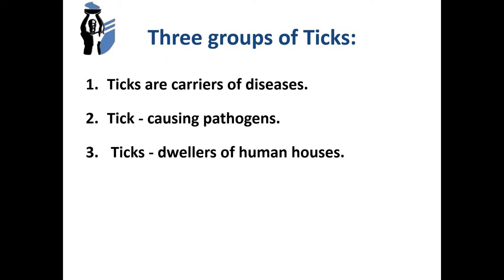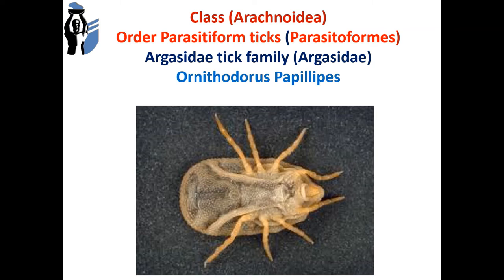Representatives of order Parasitiformes, family Argasidae: one of them is Ornithodoros papillipes, the main vector of tick-borne relapsing fever in Central Asia. The body length is 5 to 8 mm; females are larger than males. Females lay eggs in late summer and autumn. The duration of development at all stages depends on climatic conditions and frequency of feeding. These ticks attack animals and humans.